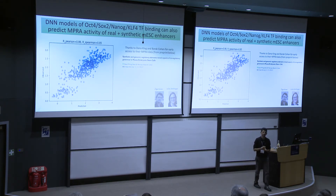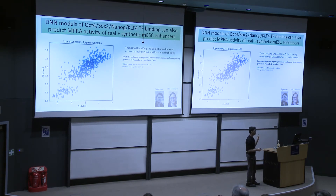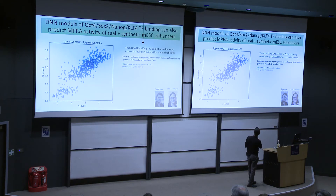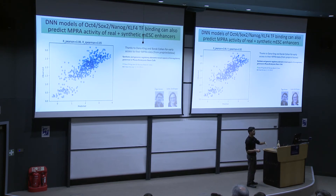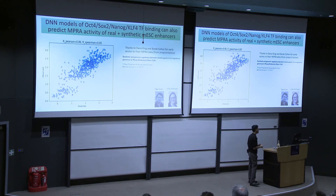The key question is whether these models can actually generalize beyond just overfitting to training data. One nice proof of concept: if you're learning models for transcription factor binding, can they predict expression effects of enhancers? Here is an example of a model trained on ChIP-nexus data for Oct4, Nanog, and KLF4 transcription factors, used directly to predict effects in MPRAs. Taking these enhancers, creating synthetic or real enhancers in mouse embryonic stem cells, and measuring expression levels — the model was never trained on MPRAs, so it's actually picking up functional signal, not just artifacts of ChIP-seq. You can really transfer these models to make functional predictions.